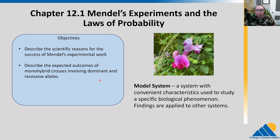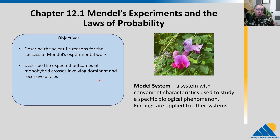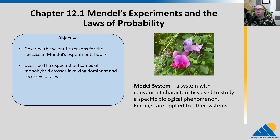A model system is a system with convenient characteristics used to study a specific biological phenomenon. The findings are then applied to other systems. The great thing about evolution is we all share many of the same mechanisms. We've talked about glycolysis — everything has glycolysis, so we could study that in E. coli and understand how it works in humans. Mendel studied pea plants, but he was able to work out the rules of genetics for all organisms that undergo sexual reproduction.